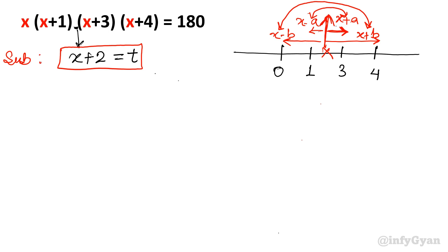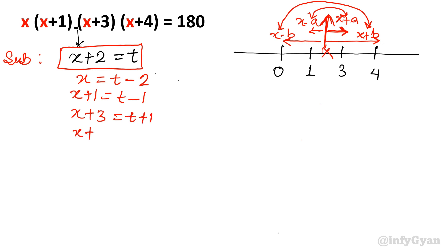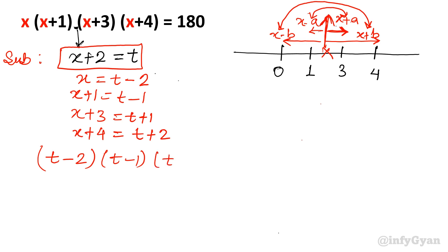Now let us start. If x+2 is equal to t, then x will be t−2, x+1 would be t−1, x+3 would be t+1, and the last bracket x+4 will be t+2. Putting all the values respectively: (t−2)(t−1)(t+1)(t+2) is equal to 180.